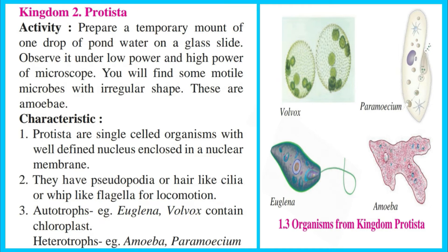Kingdom Two: Protista. Activity — Prepare a temporary mount of one drop of pond water on a glass slide. Observe it under low power and high power of the microscope. You will find some motile microbes with an irregular shape — these are Amoeba. Characteristics: 1. Protista are single-celled organisms with a well-defined nucleus enclosed in a nuclear membrane. 2. They have pseudopodia, hair-like cilia, or whip-like flagella for locomotion. 3. Autotrophs — e.g., Volvox, which contains a chloroplast. 4. Heterotrophs — e.g., Amoeba and Paramecium.